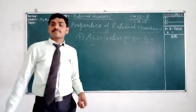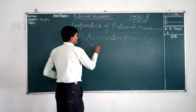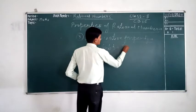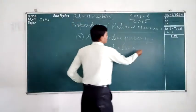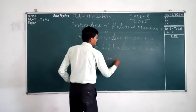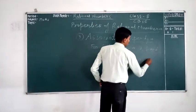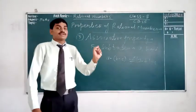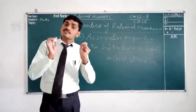Now, come for the subtraction. For subtraction, (A − B) − C is not equal to A − (B − C). That is, we can say that rational numbers are not associative for subtraction.